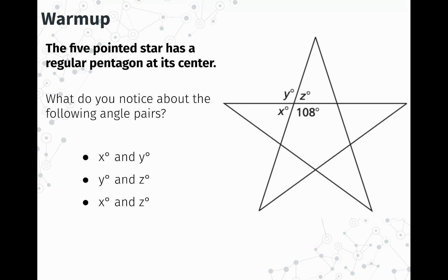Let's do a little warm-up. The five-pointed star has a regular pentagon at its center. Right here in the center is a regular pentagon. Recall that a regular pentagon means all of the interior angles are congruent and all its sides are congruent. Now what do you notice about the following angle pairs — X degrees and Y degrees, this angle and this angle?